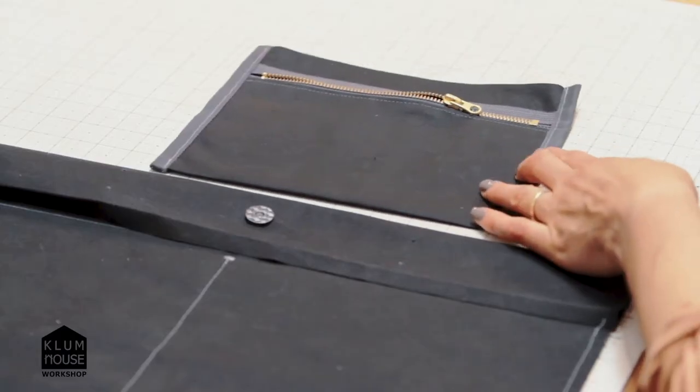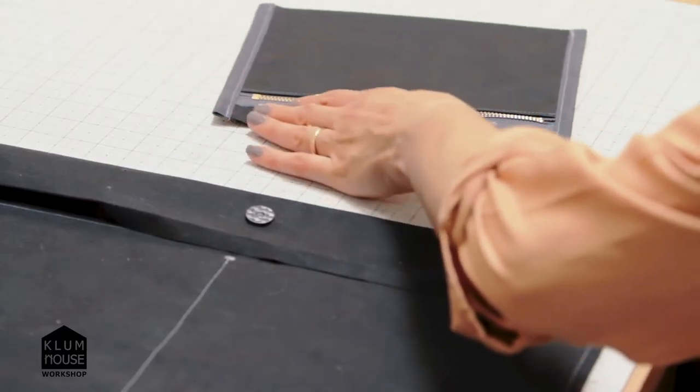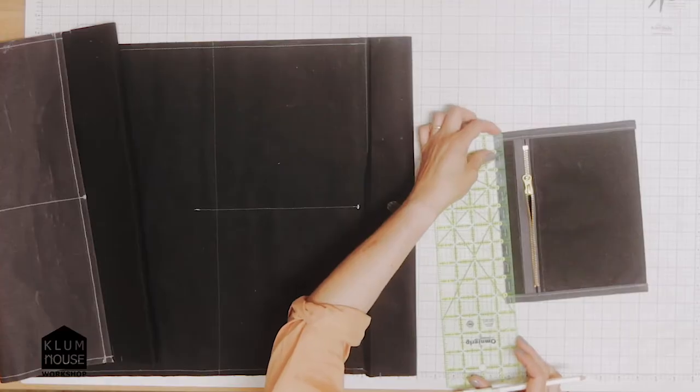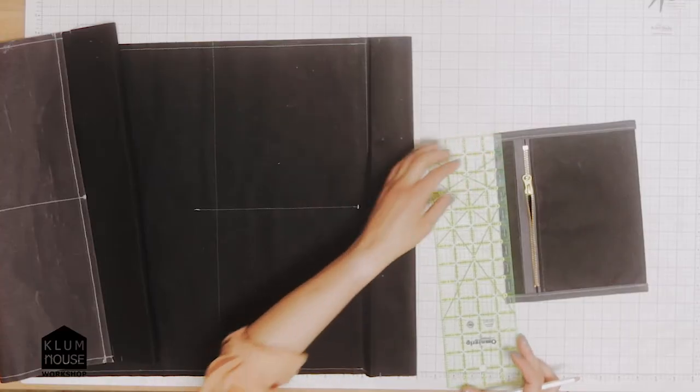The first thing I'm going to do is mark the center of the interior pocket to align it with the center of the hem here.